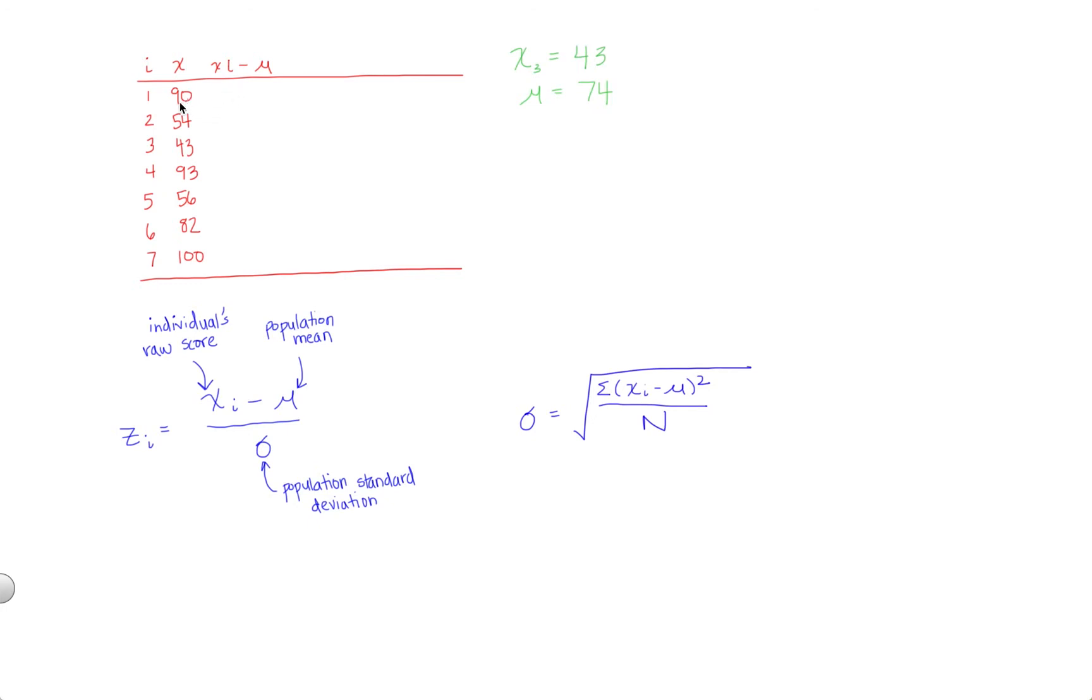We get 90 minus 74 equals 16, 54 minus 74 is negative 20, 43 minus 74 is negative 31, 93 minus 74 is positive 19, 56 minus 74 is negative 18, 82 minus 74 is positive 8, and 100 minus 74 is 26.